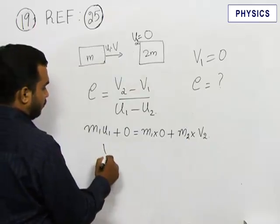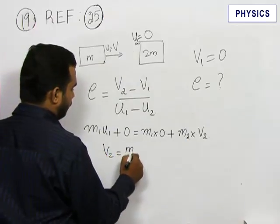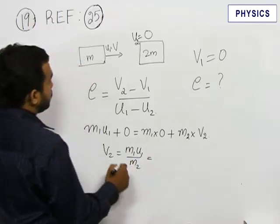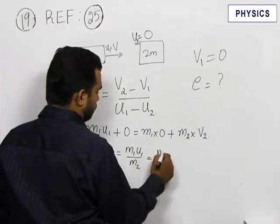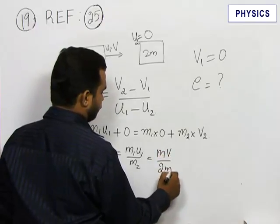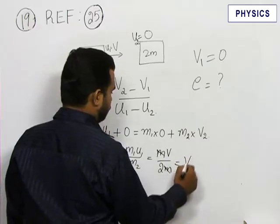So we can find the value of v2. m1u1 by m2, but m2 is 2 times m. So m v by 2m, you get v2 as v by 2.